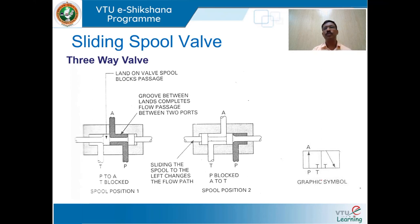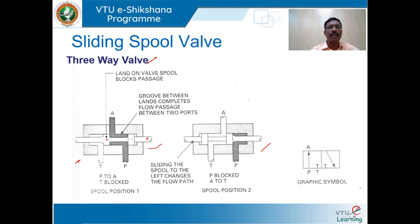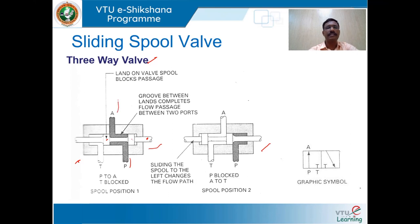We shall move on to the sliding spool valve, beginning with the three-way spool valve. This arrangement shows two switching positions. It consists of a spool with lands that slides within the valve body. Port P is connected to the pump line, A is connected to the cylinder as the output port, and T is connected to the tank.